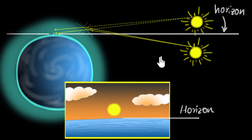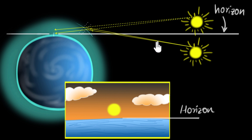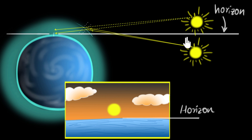And if you're wondering exactly how early or how delayed we see the sunrise or the sunset — if we do the calculation, it turns out it's about a couple of minutes. So we get to see the sunrise a couple of minutes earlier, and the sunset is delayed by a couple of minutes.